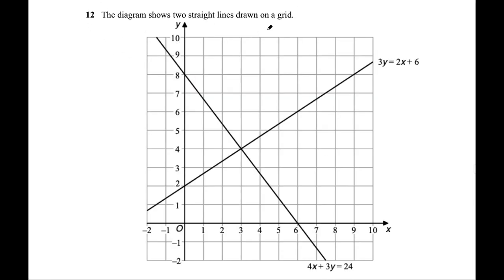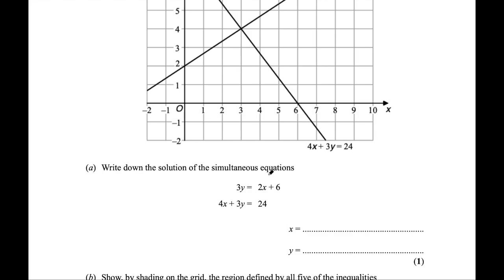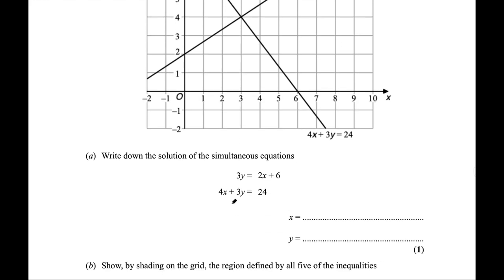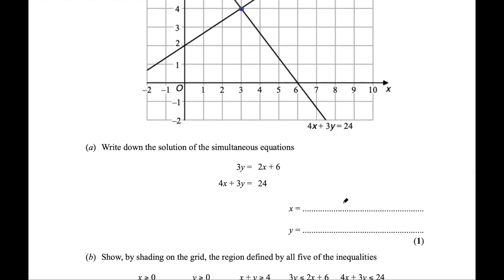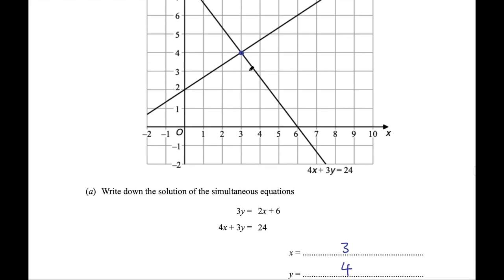Question 12: two straight lines are drawn — 3y = 2x + 6 and 4x + 3y = 24. Part A asks for the solution of these simultaneous equations. For two straight-line equations, the solution is where the lines intersect. Reading the graph, the intersection is at (3, 4), so x = 3 and y = 4.